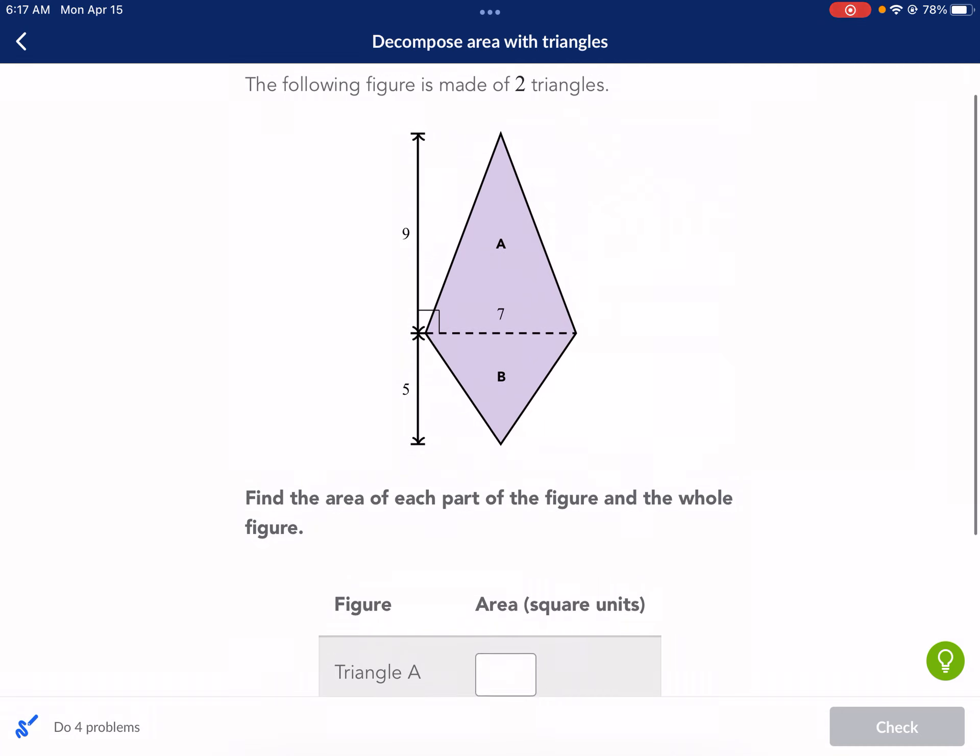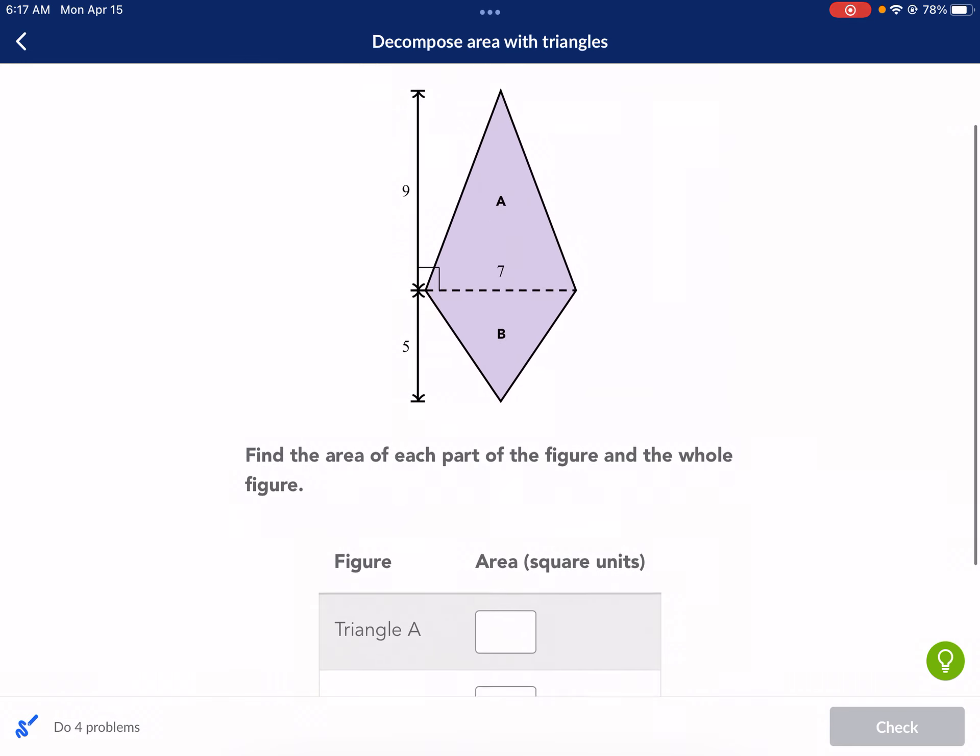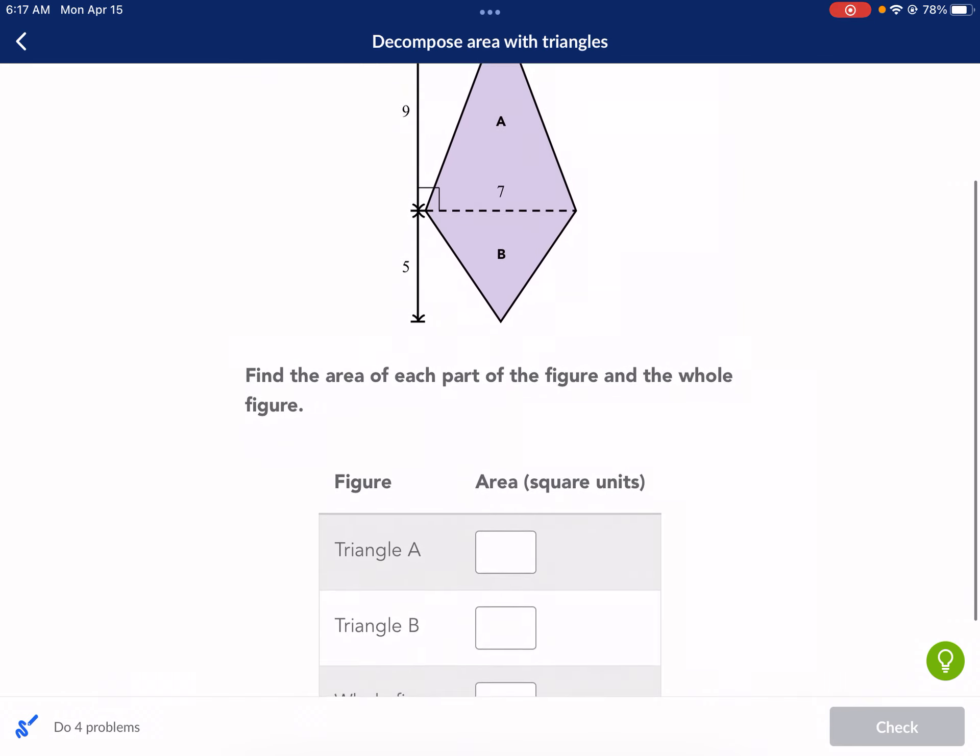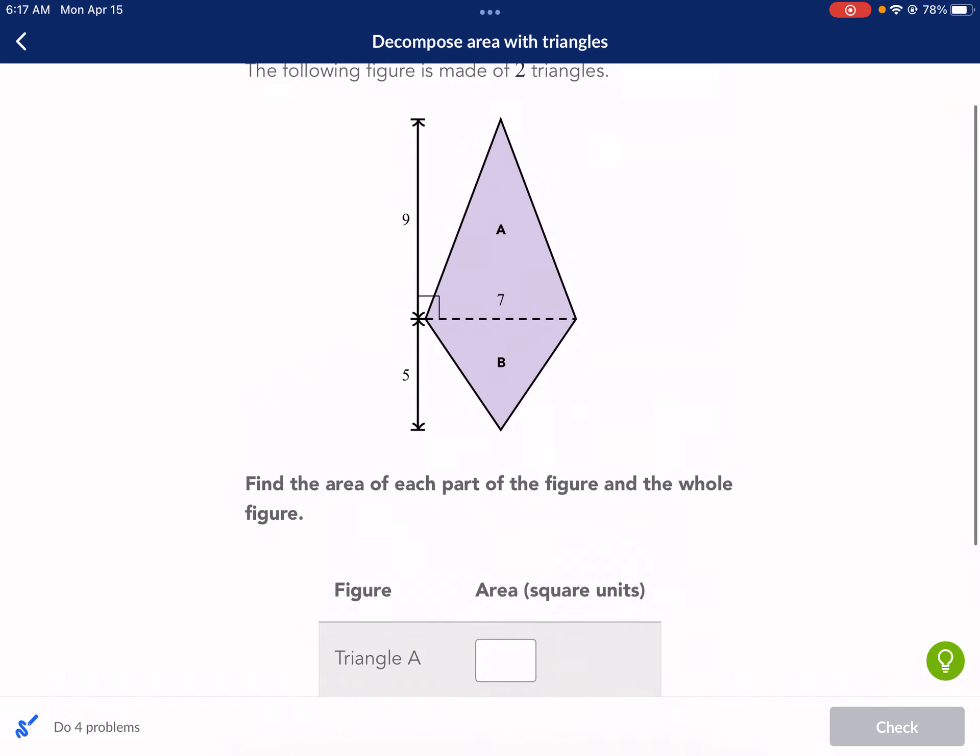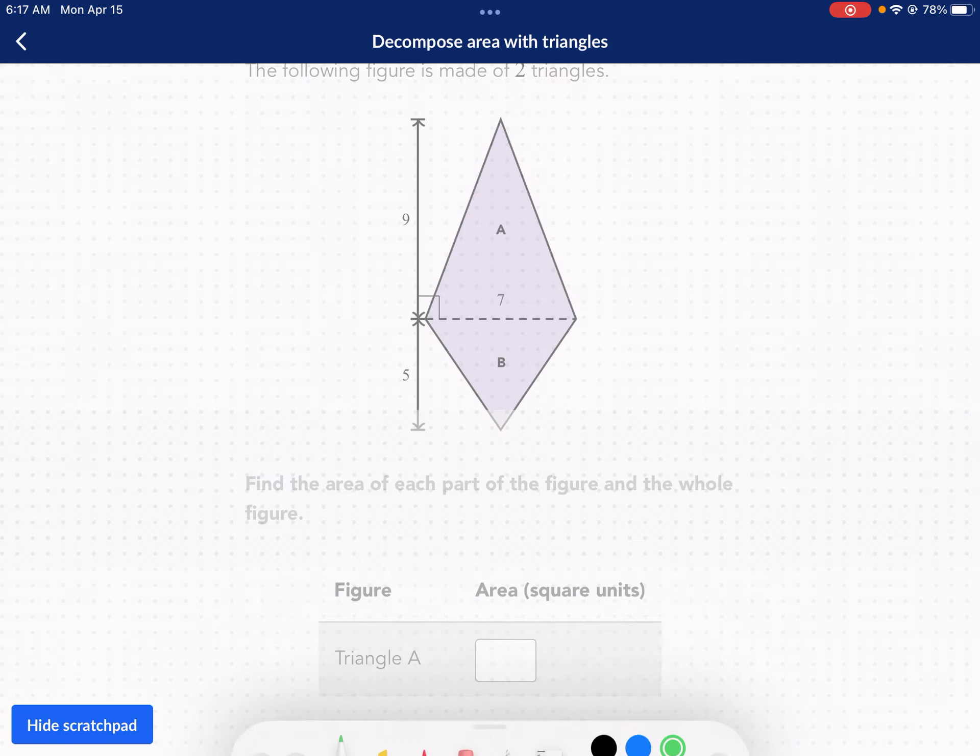The first one says the following figure is made of two triangles, just as I described. Find the area of each part of the figure and the whole figure. I think the toughest part about this Khan Academy exercise is figuring out what the dimensions are for each shape. This first one is actually pretty easy, so I'm going to go ahead and show you how we find the dimensions relatively easy for this one. Here we have a triangle on top and I'm going to draw it over here for the second one, a triangle on the bottom.